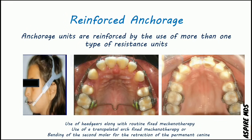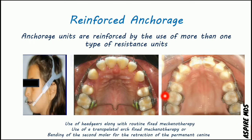Reinforced anchorage is where anchorage units are reinforced by the use of more than one type of resistance unit. Examples include use of headgear where extraoral support is taken, or a transpalatal arch where palatal support is used. In cases of canine retraction, you can bend the maxillary first molar for retraction support, and additionally recruit the second molar — so first and second molar together providing anchorage is an example of reinforced anchorage.